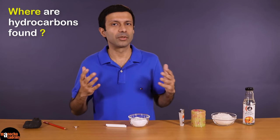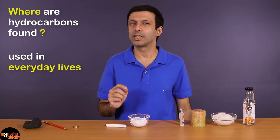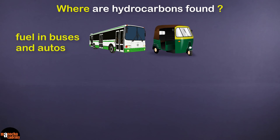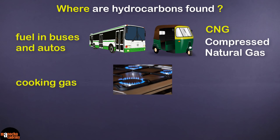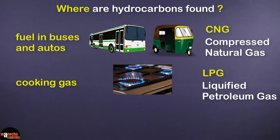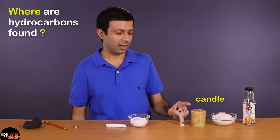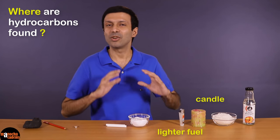Now where are hydrocarbons found? They are present in our everyday lives. The fuel used in buses and autos is CNG, compressed natural gas, and it contains hydrocarbons. Cooking gas is LPG, liquefied petroleum gas, again containing hydrocarbons. Petrol, diesel — these are all made up of hydrocarbons. And as we discussed, this candle and the fuel in the lighter also contain hydrocarbons.